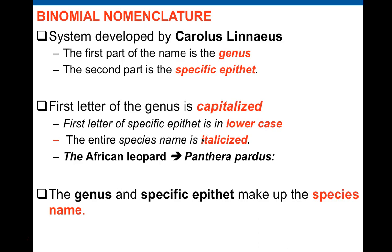For example, if I say I saw a leopard, you don't know whether it was an African leopard or a snow leopard. But if I say I saw Panthera pardus, you can be sure I saw the African leopard. If I say Panthera uncia, you know I saw the snow leopard. This is binomial nomenclature: 'Panthera' is capitalized, 'pardus' is lowercase, and the whole name is italicized.